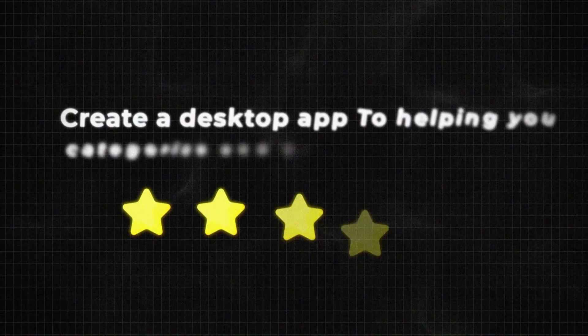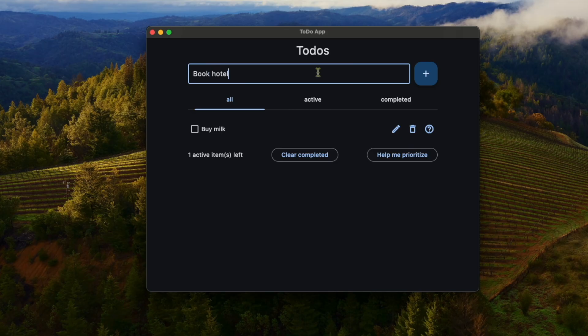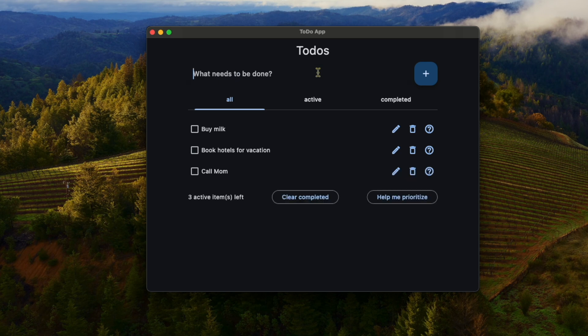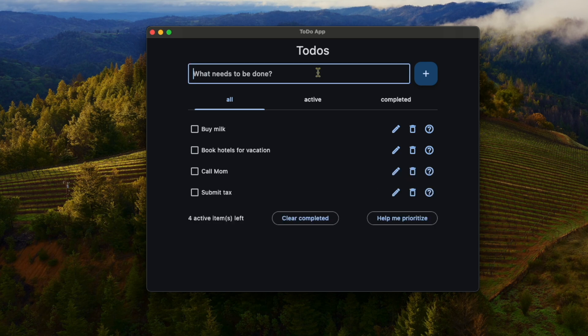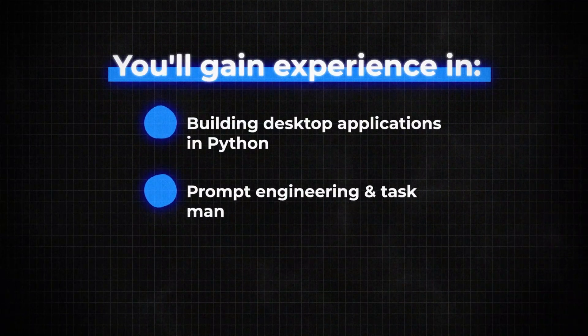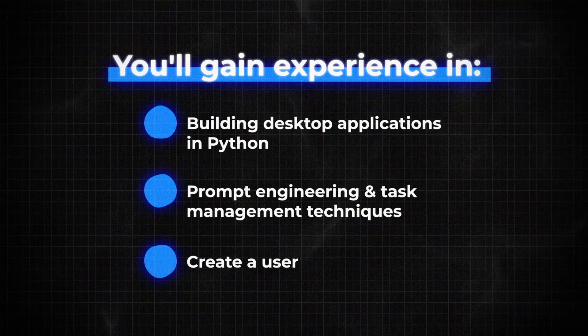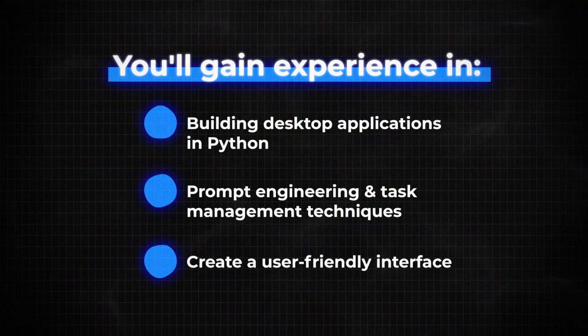Project number five: create a desktop app to help you categorize and prioritize your to-dos. We've all been there, staring at a mountain of tasks and not knowing where to start. This project is about creating your personal productivity sidekick — it helps you tackle your to-do list by suggesting what's most important and needs to be done first. You'll gain experience building desktop applications, for example using the Flet framework in Python, and use prompt engineering to tell the language model to apply a task management technique like the Eisenhower matrix to prioritize tasks, then process the output and create a user-friendly interface.